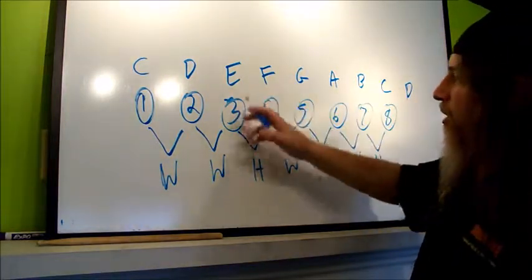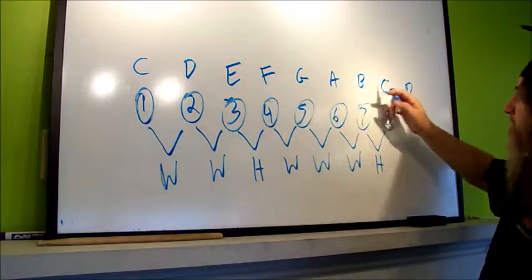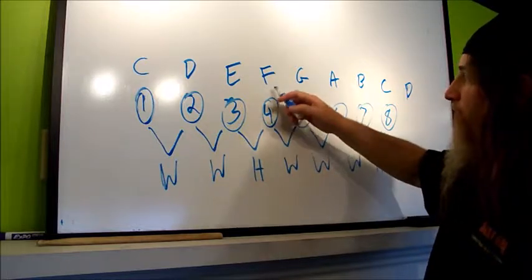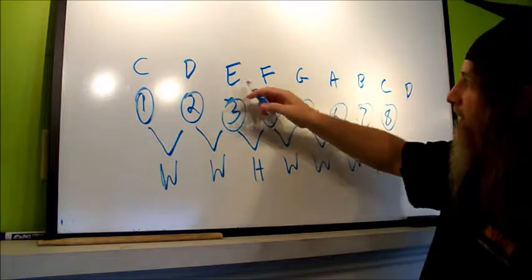So the third mode starts and stops on E. So it would be E, F, G, A, B, C, D, E. The fourth mode, F, F, G, A, B, C, D, E, F.